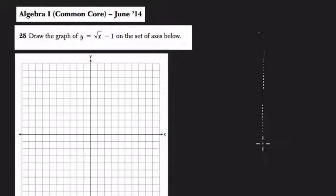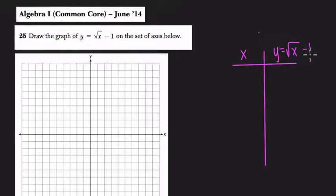So we'd make a table of inputs and outputs. x is input, y is output, and y is equal to the square root of x minus 1. So if we try 0 for x, what is the square root of 0 minus 1? Well, that's negative 1. If you plug in 1 for x, you get the square root of 1 minus 1, which is 0.